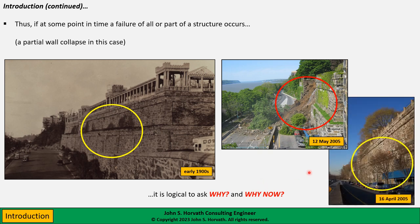This is especially true when less than a month before the failure, this photo was taken and the wall is still standing — no obvious signs of failure, although as we will talk about later, there was some rather visible substantial horizontal bulging at mid-height of this wall.